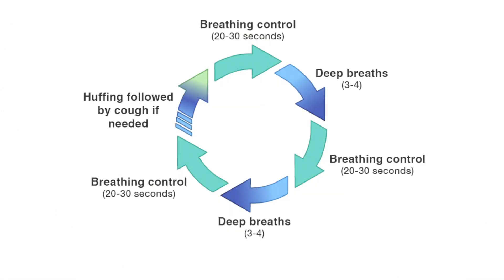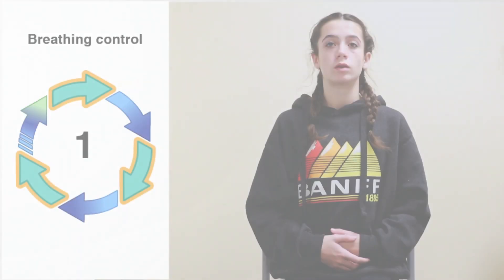Active cycle of breathing is a type of airway clearance that does not require any equipment, allowing you to do these breathing exercises in different environments or when you need to clear some mucus. It's made up of three parts.